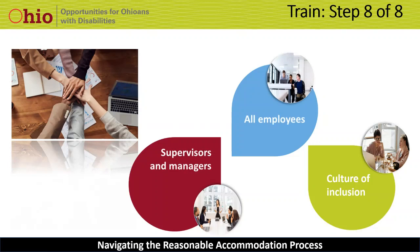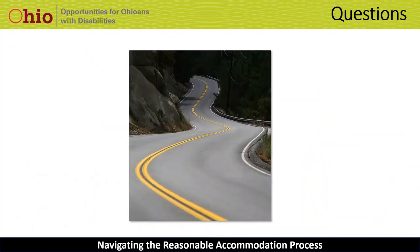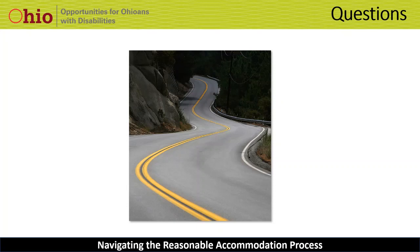Q&A: How does union representation play into the interactive process if the employee requests it? The EEOC guidance does speak to that. I would imagine the union has a process within what is permitted in the guidance, and I would recommend looking through that guidance to establish the proper way to handle it. Q&A: Does an accommodation become unreasonable only if it causes undue hardship? An accommodation could potentially become an undue hardship, but you also want to give thought to whether it compromises safety in the work environment for the person or for others. If a direct threat results from an accommodation, that could be considered alongside undue hardship.